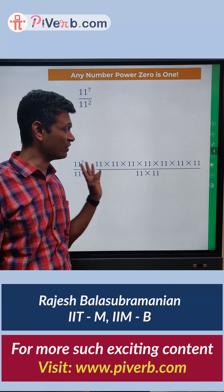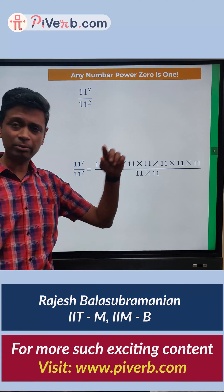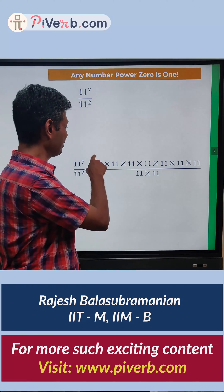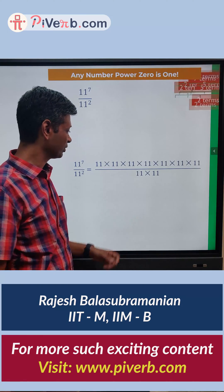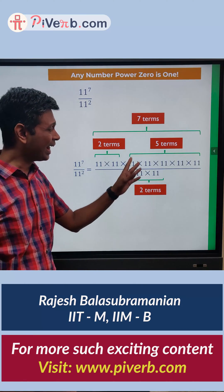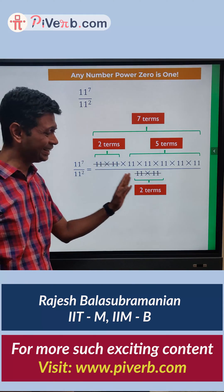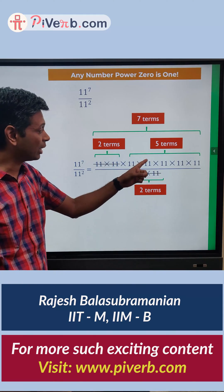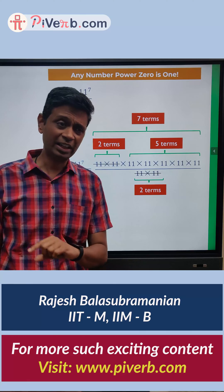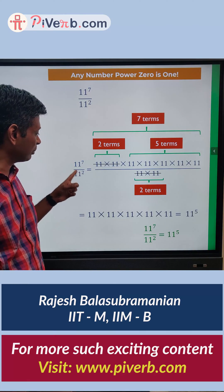This is 11 multiplied 7 times divided by 11 multiplied 2 times. We are going to cancel 2 of the elevens, and then have 5 remaining. We delete these 2, and we have 11 to the power 5 remaining — which is effectively nothing but 11 to the power 7 minus 2.